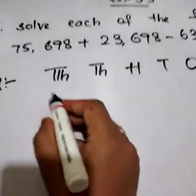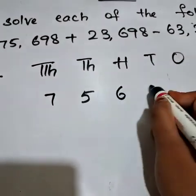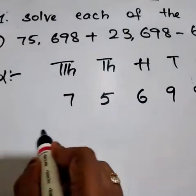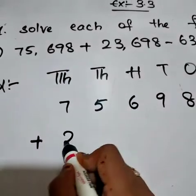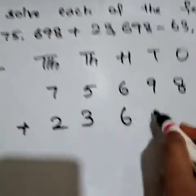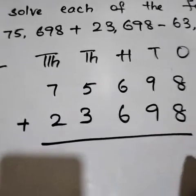This is our solution. I am starting solving here. This is 75,698 plus... Firstly, we have to add these 2 numbers. So, 23,698. Let us start this adding.